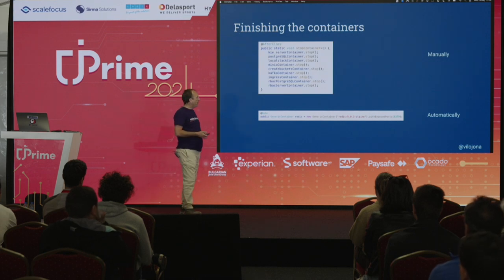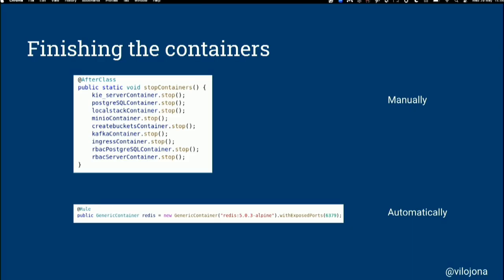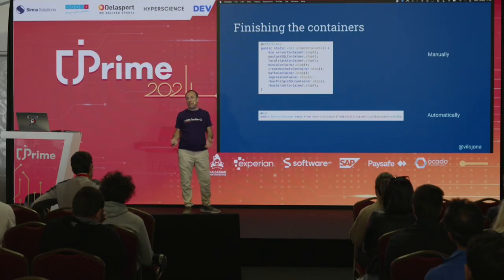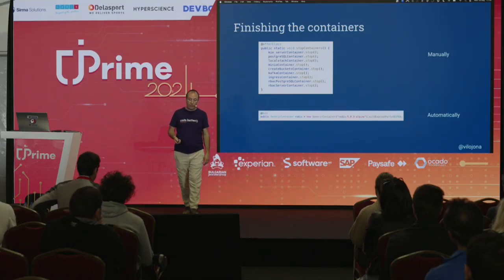If you are using Spring Boot 3, you can just simply have service connections and it will take care of all those connections. It's an easier way — every time you connect to a PostgreSQL database container, it will have the ports dynamically and easily. And finishing the containers — you can stop them manually, but the best way is automatically connecting to the lifecycle of your test.